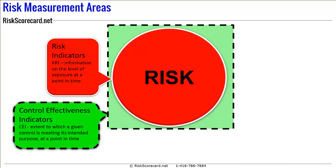What we need to do is measure the effectiveness of those controls. We call those CEI, Control Effectiveness Indicators. We're taking a look at whether the right controls are in place, if they're being applied, and if they're being effective. That's the second type of risk indicator, and it's also predicting where risk might occur.